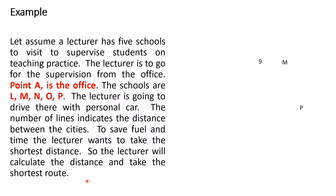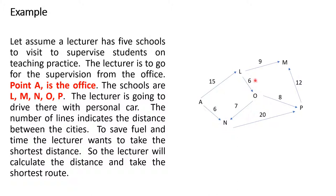This can be represented graphically. The starting point is point A, and these are all the places the lecturer is going to visit: L, M, N, O, P. The distances shown are 15, 9, 6, 12, 8, 20, 6, and 7. These are the distances, and the lecturer wants to go through the shortest route. So the question is: what can we do to achieve this?